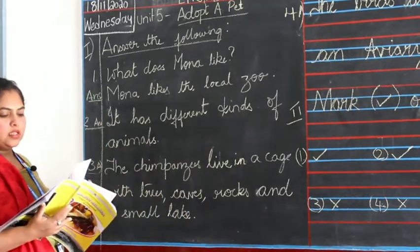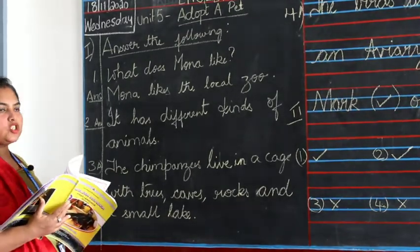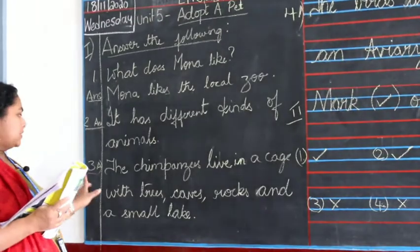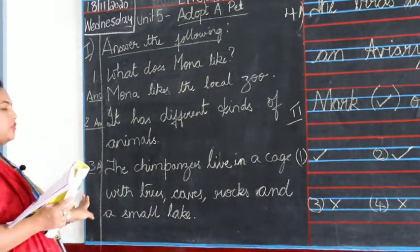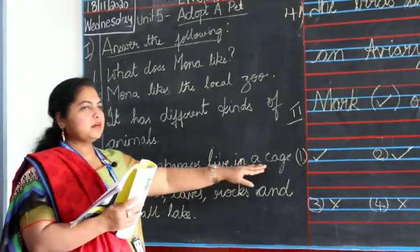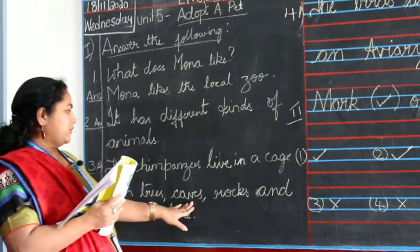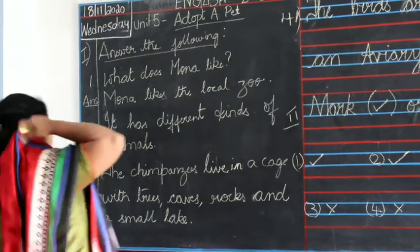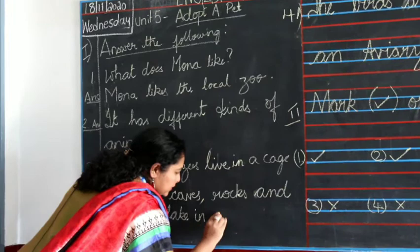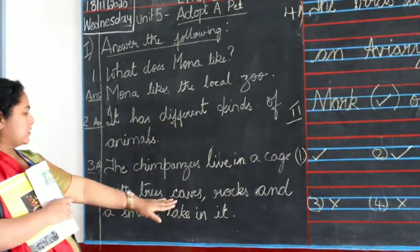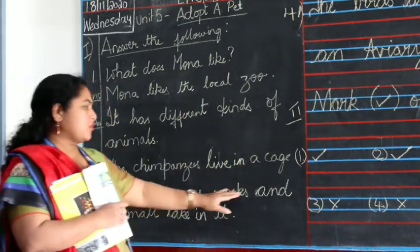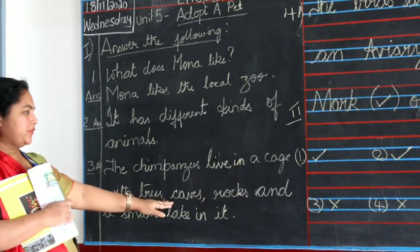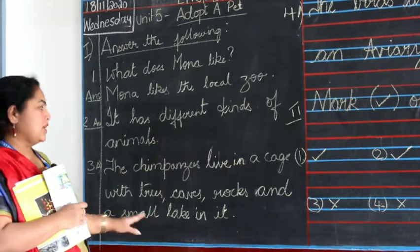Now third one. The third question is, name the things in the cages for the chimpanzee. So the chimps live in a cage and we have to know what all things you find in the cage. Now what you will find? That's your third answer. I have written A. You will have to write A-N-S as a short form of answer. And write, the chimpanzee live in a cage with trees, caves, rocks and a small lake in it. The chimpanzees live in a cage with trees, caves, rocks and a small lake in it. That's the answer for the third question.